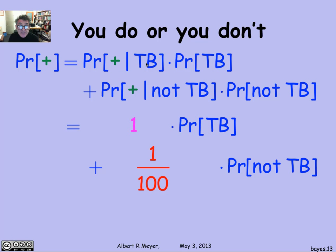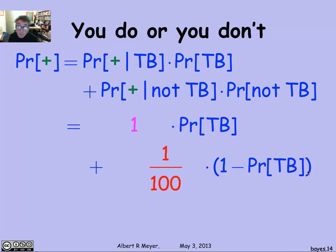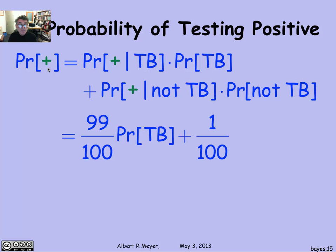The probability that the test comes in positive given that you have TB is 1. The probability it comes in positive given you don't have TB is 1/100 — that's the false positive rate. The probability that you don't have TB is simply 1 minus the probability that you do. This gives a nice arithmetic formula: probability of TB plus 1/100 minus 1/100 times the probability of TB, which leaves 1/100 plus 99/100 times the probability of TB. So the probability that the test comes in positive is (99/100) times the probability of TB plus 1/100.